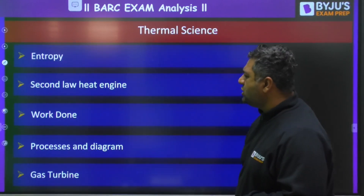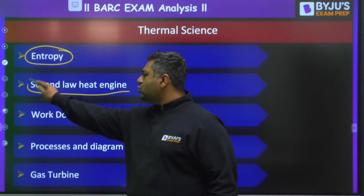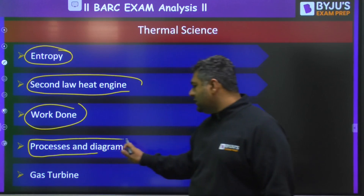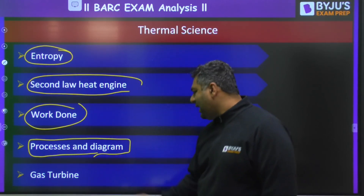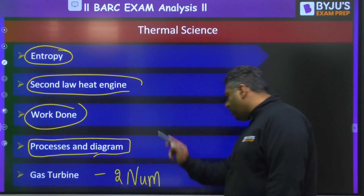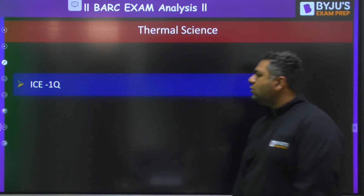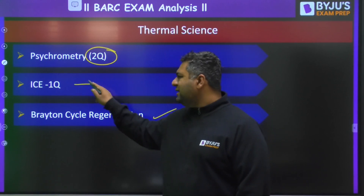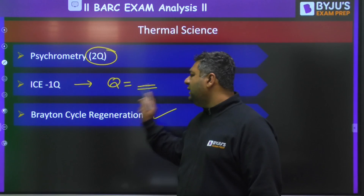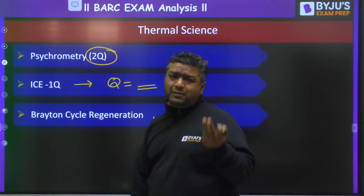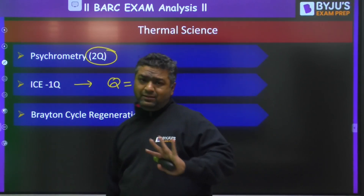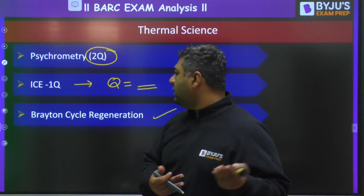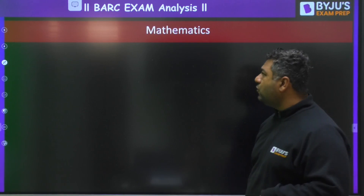For Thermodynamics, questions were there from entropy calculations and heat engine second law. One question involved work done calculation from given diagrams, and one question was about identifying a process — whether adiabatic or otherwise — from given graphs. Gas turbine had two numericals, from the power plant topic. Brayton cycle regeneration question was there. From psychrometry, two theoretical questions were there. One question possibly from IC engine involved heat calculation with given pressure and temperature values, though it was not confirmed — some students were unsure whether it was from IC engine or another thermodynamic cycle.